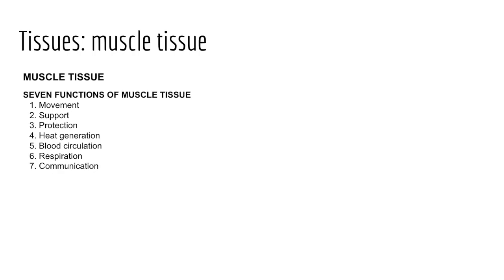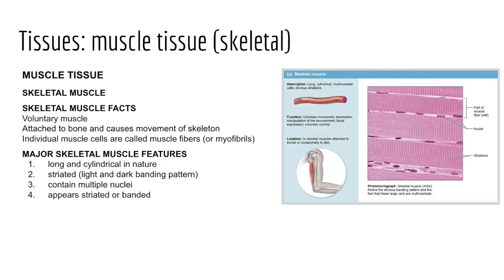First, skeletal muscle tissue is a voluntary muscle — it contracts or relaxes by conscious control and is attached to bone, typically via tendons, creating pulley systems that aid locomotion. Skeletal muscle is striated, meaning it has alternating dark and light bands visible under the microscope. Skeletal muscle fibers are long and cylindrical with many nuclei located in the periphery of each muscle cell.